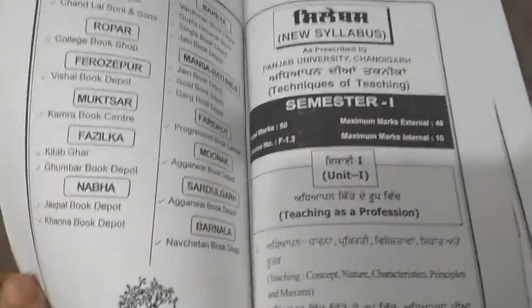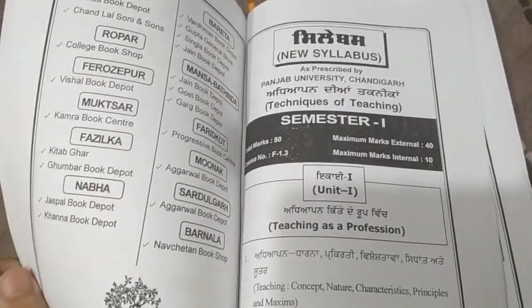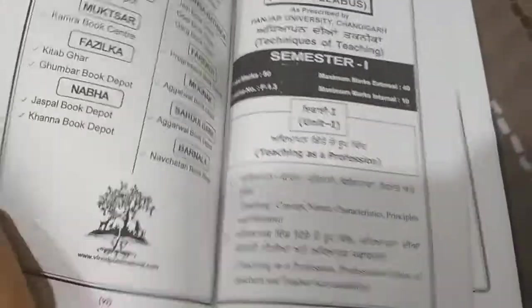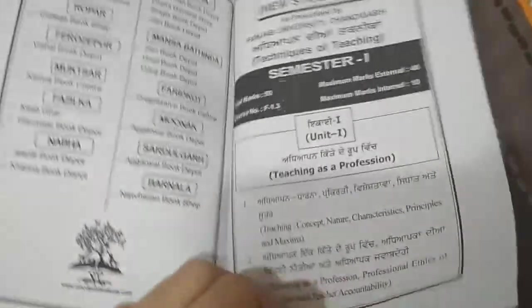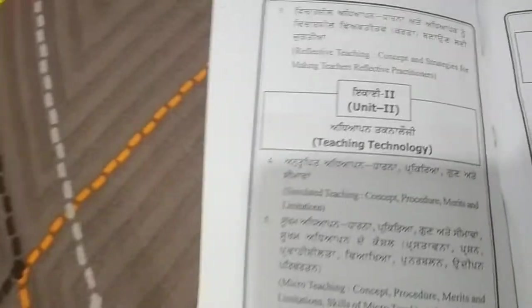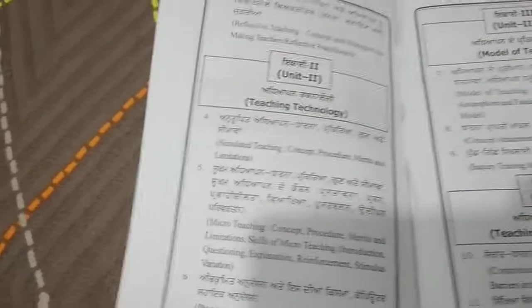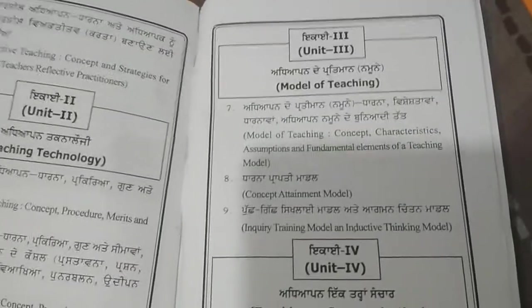First of all, the syllabus is mentioned. It's a new syllabus as prescribed by Punjab University Chandigarh, and unit-wise topics are listed. Unit 1 is Teaching as a Profession, unit 2 is Teaching Technology, unit 3 is Model of Teaching, and unit 4 is Teaching as Communication — all mentioned in detail. Then we come to the contents.